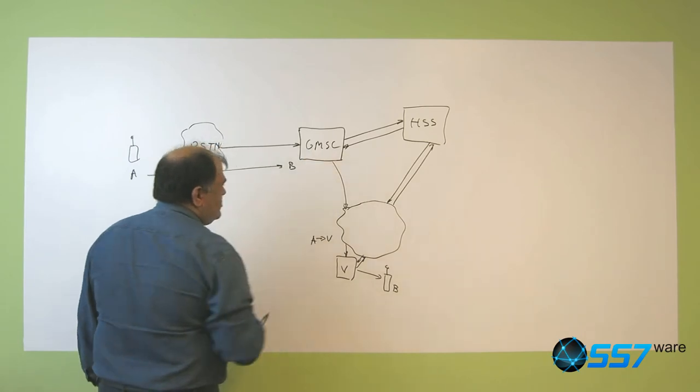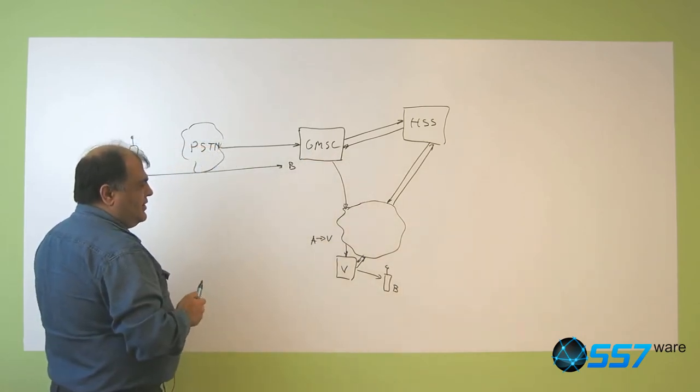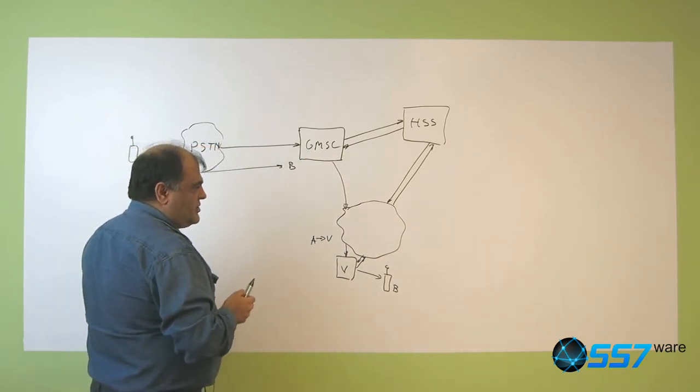As you see, the role of this GMSC is to rewrite the call so that they can reach a user that's roaming in some other network.